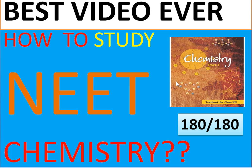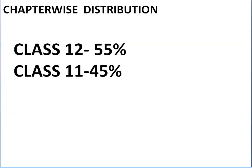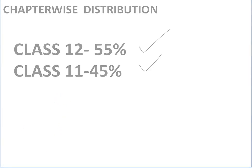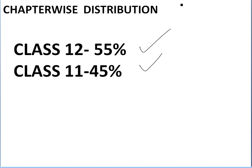First of all, you have to see the chapter-wise distribution. In class 12th there is 55% of the syllabus we are covering, and in class 11th we are covering 45% of the syllabus in the NEET exam. So we have to prepare 55% of 12th class and 45% of 11th class. The chapters of 12th class are more, so concentrate more on that.